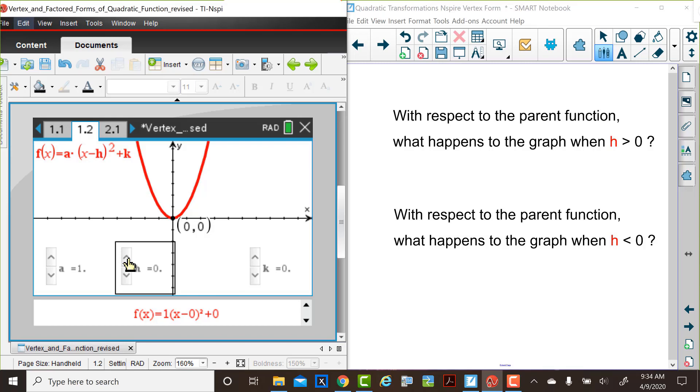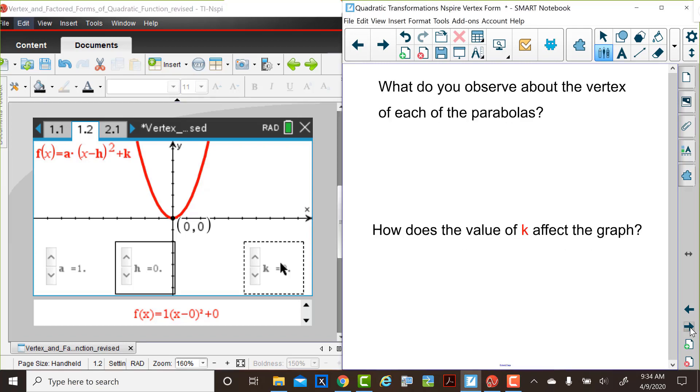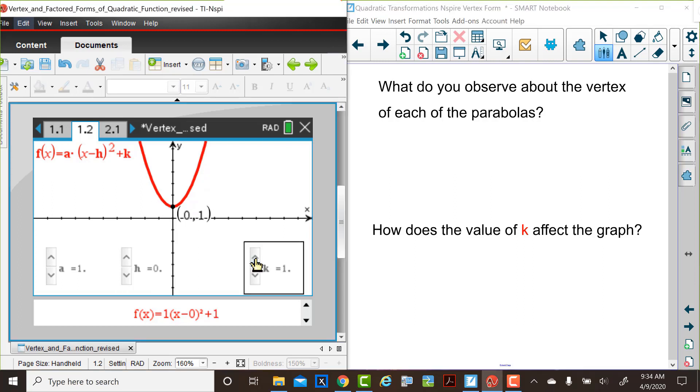Now, Judy will reset the h value to 0, and we're going to consider what happens in our other parameter, k. So we're going to think about what happens to the vertex of these parabolas when the value of k is changed.